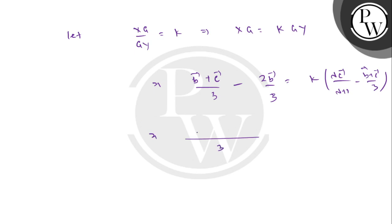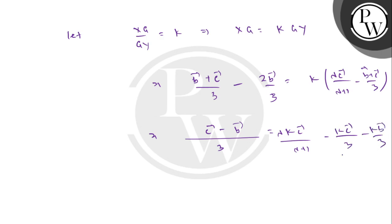Simplifying the left side: (vector C − vector B)/3. Now comparing coefficients of vector B on both sides: left side gives −1/3, right side gives −K/3. So this implies K = 1. That is the value of K.